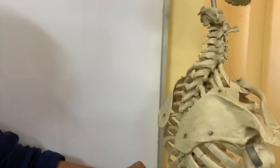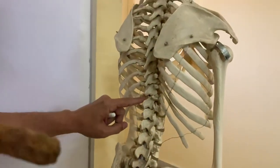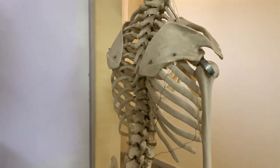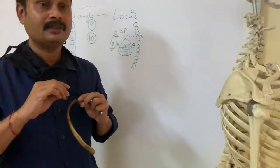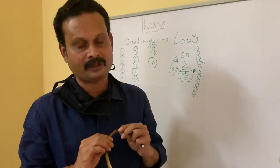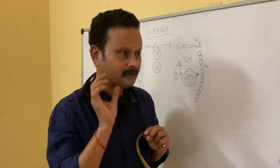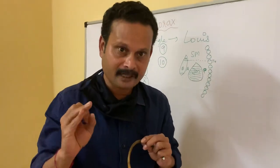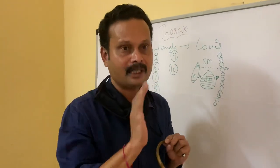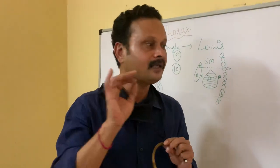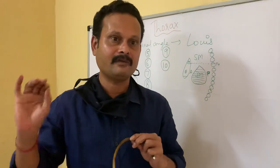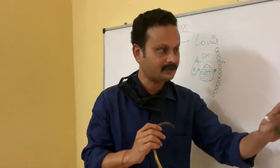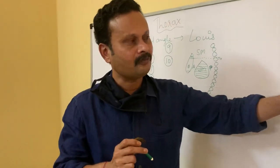Similarly, of the 12 thoracic vertebrae, not all are similar in features. Only seven thoracic vertebrae have the same features, and the remaining five differ. There are seven typical thoracic vertebrae and five atypical thoracic vertebrae. The atypical thoracic vertebrae are numbers 1, 9, 10, 11, and 12; the remaining — that is, vertebrae 2 to 8 — are typical. Why certain vertebrae are atypical will be studied in the next class.